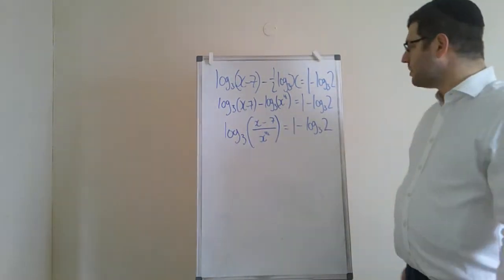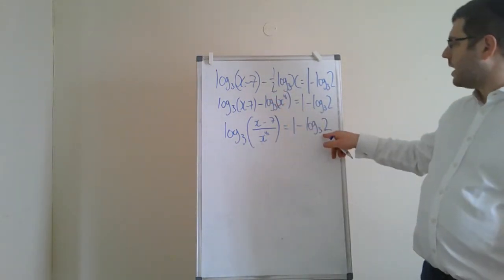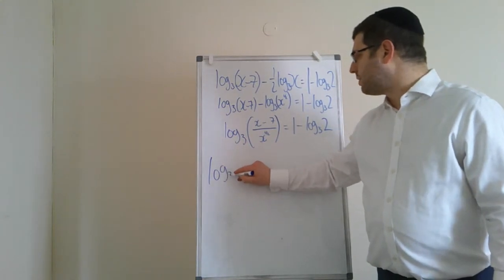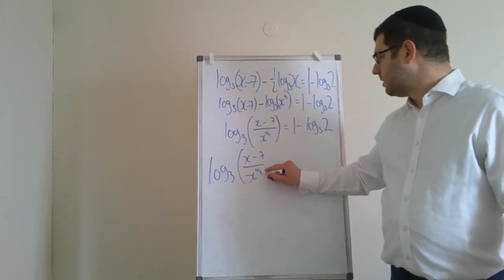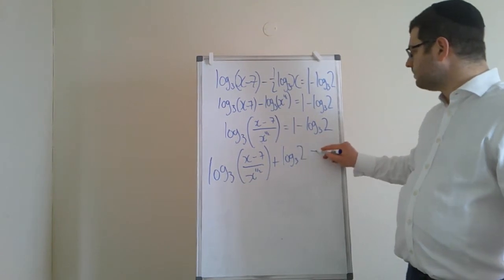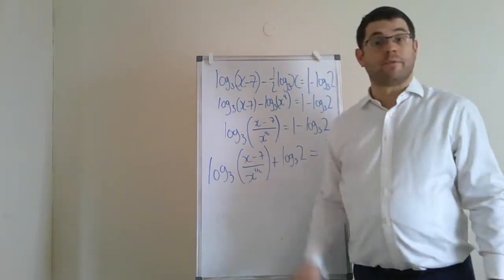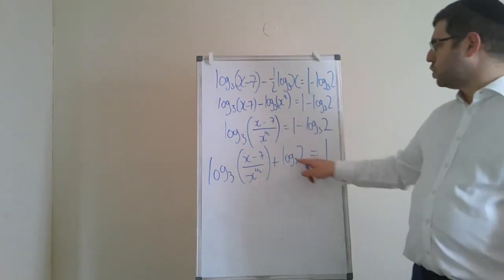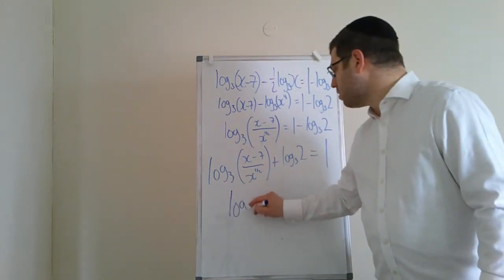What I'd recommend to do is to combine all the logs. We've combined two of them together, but now let's bring in the other one. This minus, let's bring it to the other side so it becomes plus. So you've got log 3 of all of this stuff plus log 3 of 2 is equal to 1.